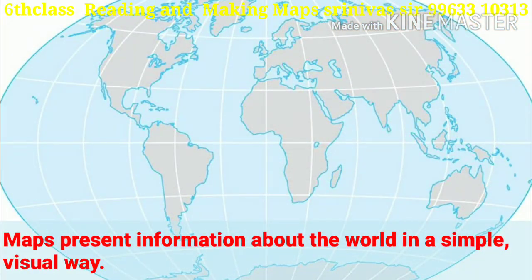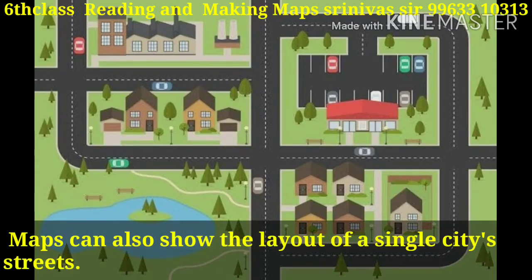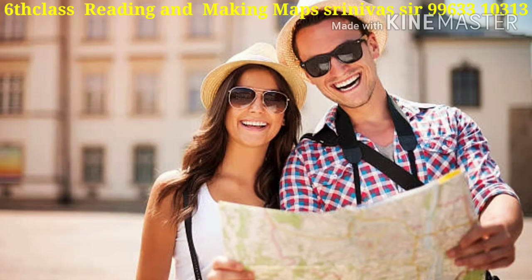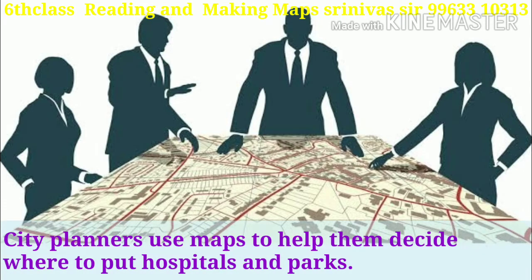Maps present information about the world in a simple visual way. They show the shapes of countries, location of water bodies or mountains, and distance between places. Maps can also show the layout of a single city's streets. Tourists use road maps to plot routes for their trips.